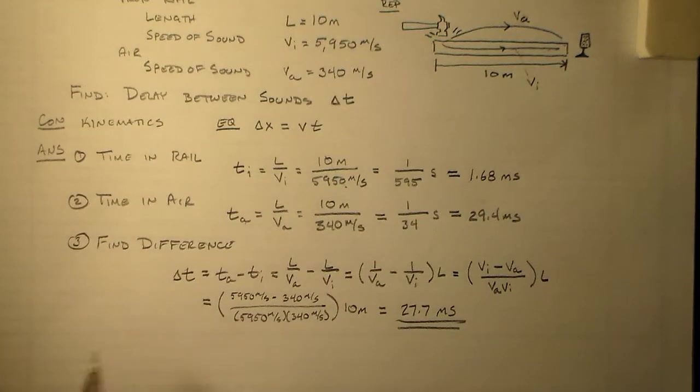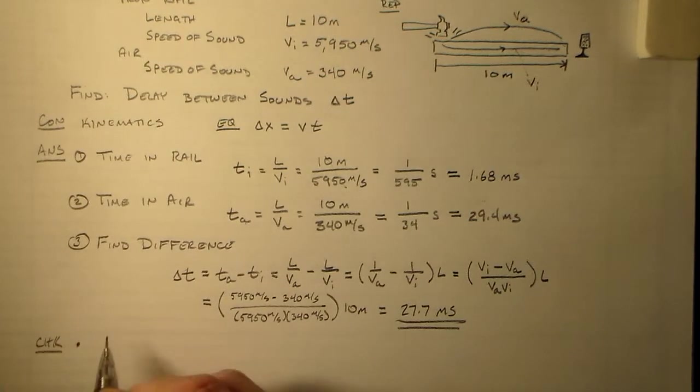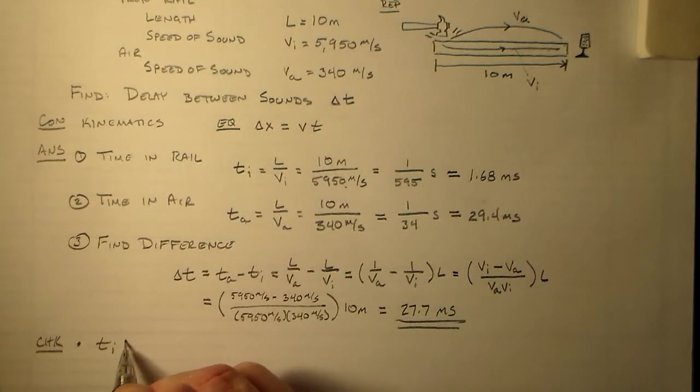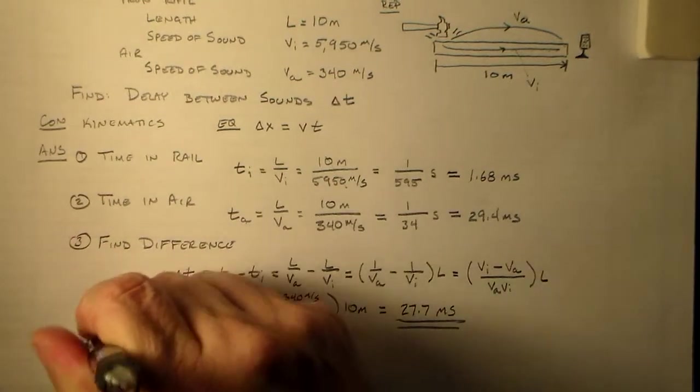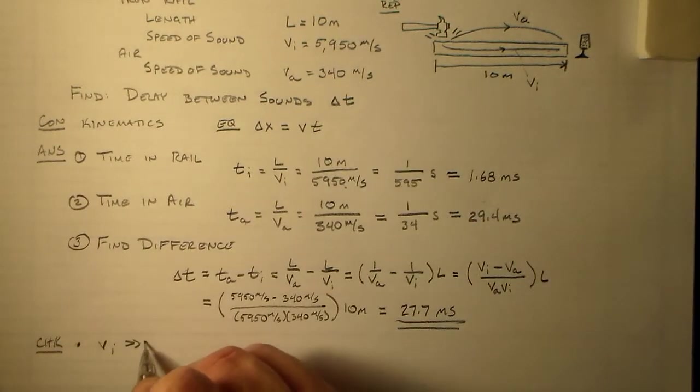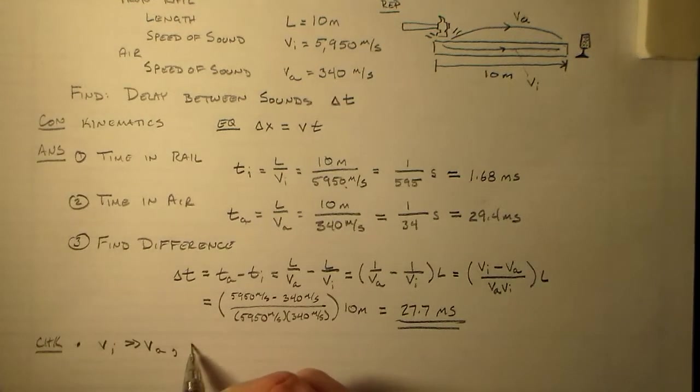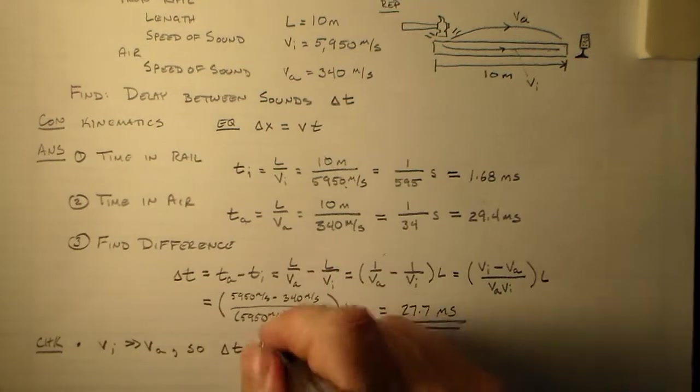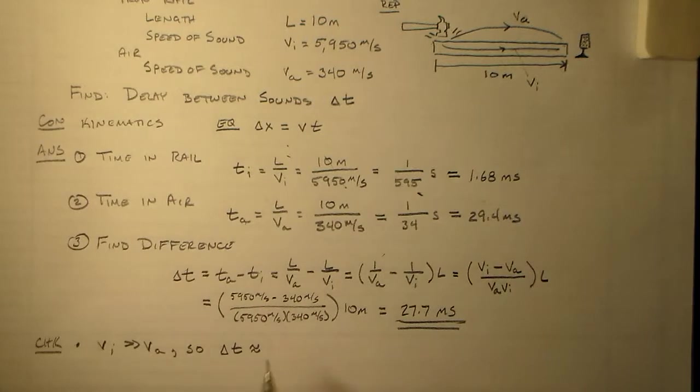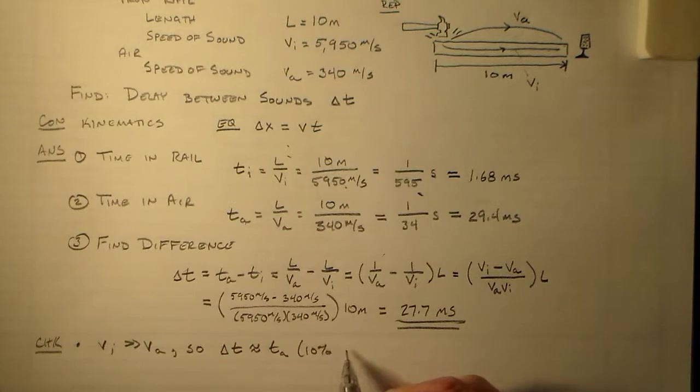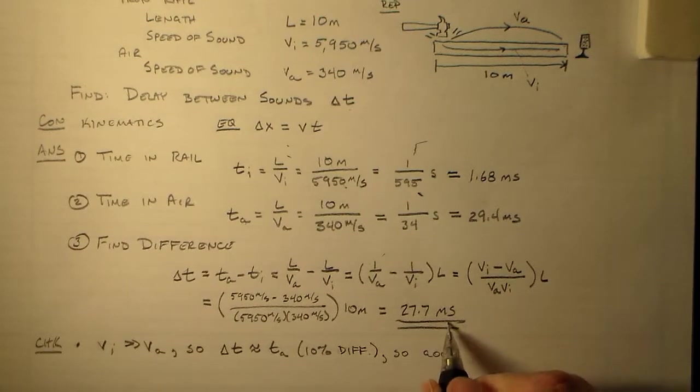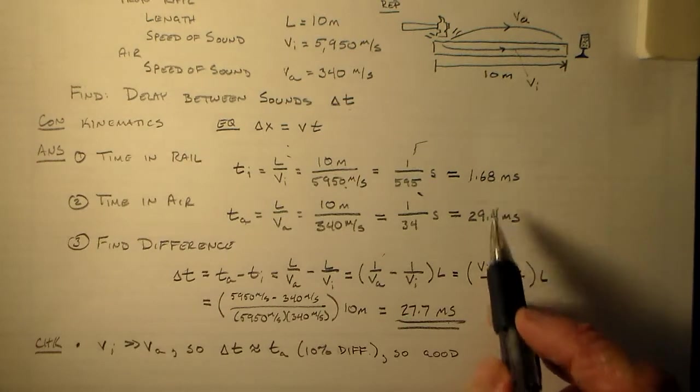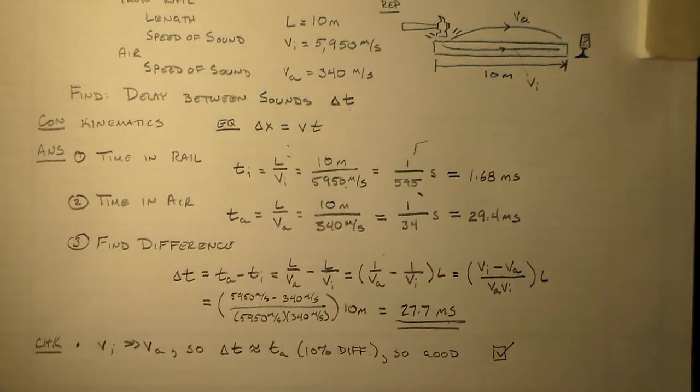Doesn't make sense? Well, we could say that because VI is so much larger than VA, it's an order of magnitude larger, right? So the fact that delta T is approximately equal to TA, I mean it's only different by about 10%, right? It's not an error, it's a difference. So that's a reasonable thing. This time should be very, very close to this time because this is just shaving off a tiny, tiny bit of that. So there you go.